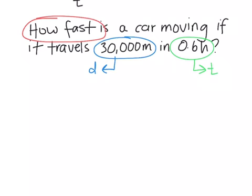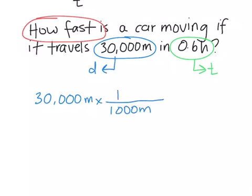Again, meters per hour is not really a unit of speed we typically use, so we want to convert either meters into kilometers or hours into seconds. The latter, so meters into kilometers, is much easier. So we're going to take 30,000 meters multiplied by our conversion factor, so 1,000 meters per one kilometer, and we're going to get 30 kilometers.